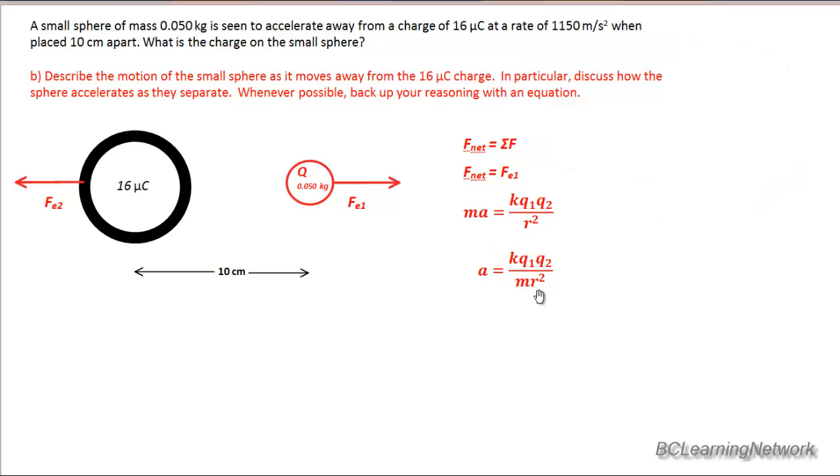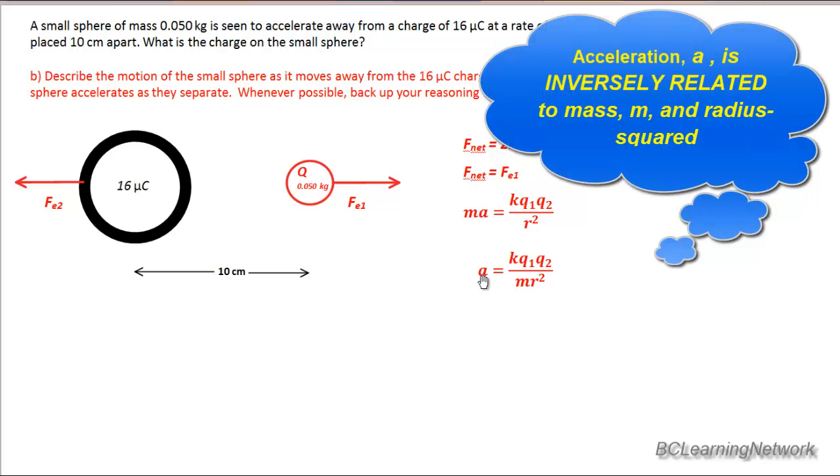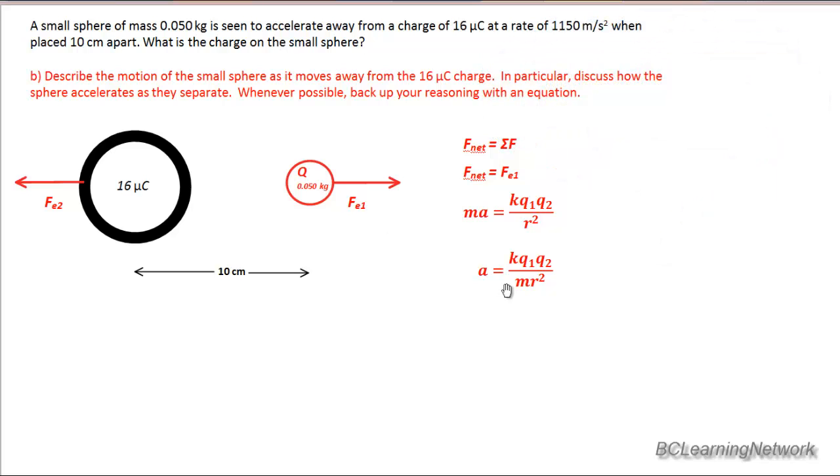Now mass and radius are on the bottom of the equation. So we say that those are inversely related to my acceleration. If the mass of this little red sphere suddenly increases, it's going to have way more inertia, and it's not going to accelerate as rapidly. That's Newton's second law. So again, that makes sense.